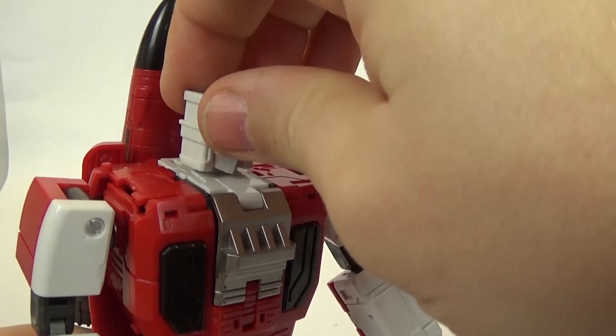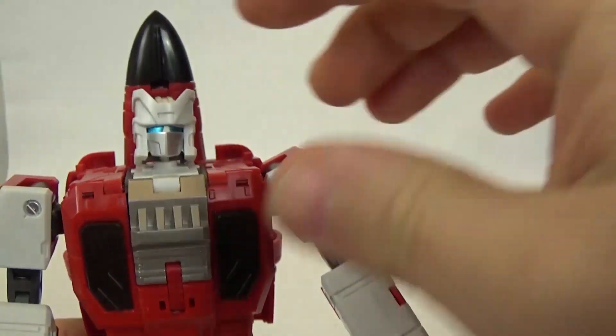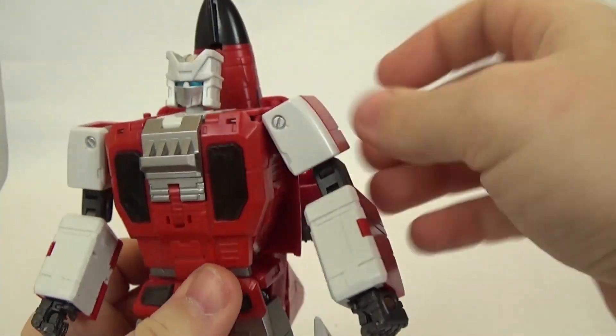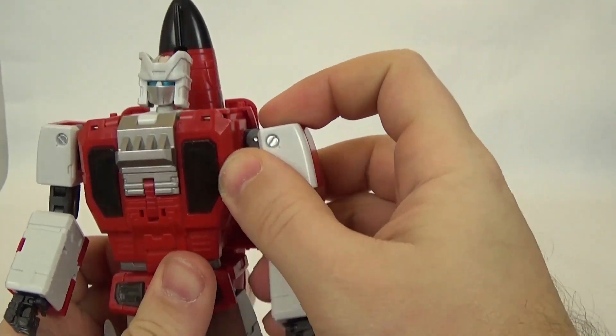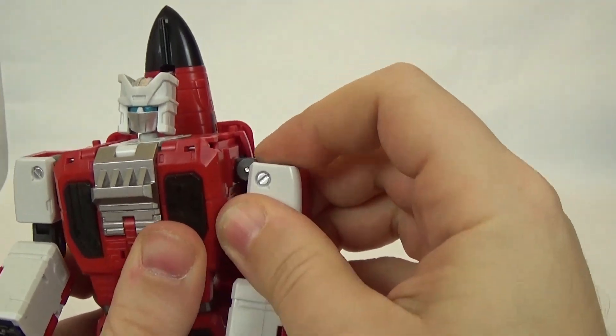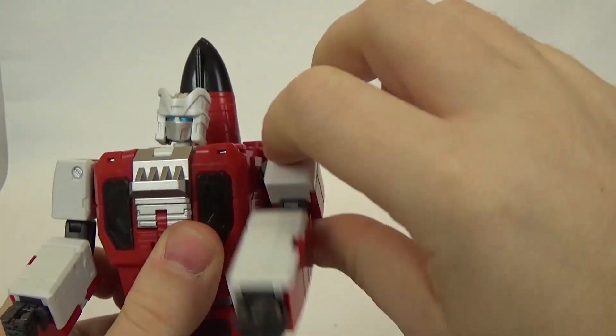This piece does tend to pop out quite easy, which is where his head sits. You do get a kind of swing double joint on the elbow.